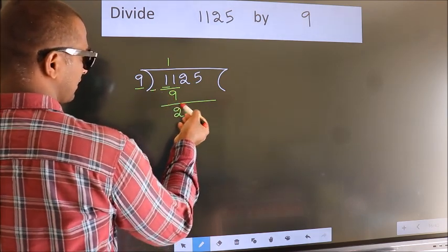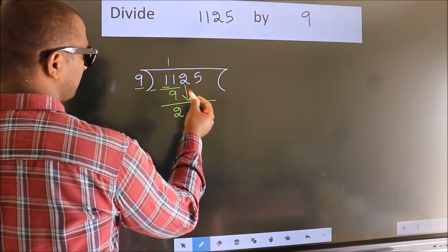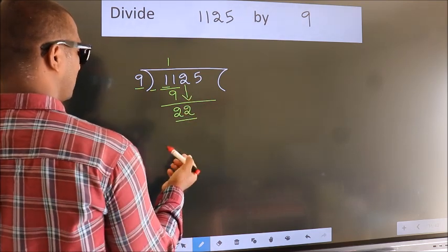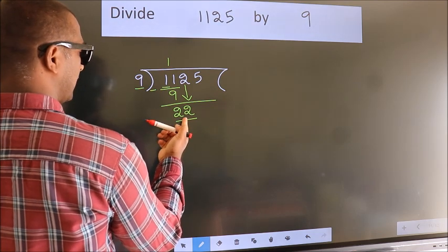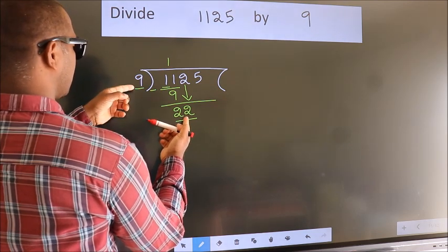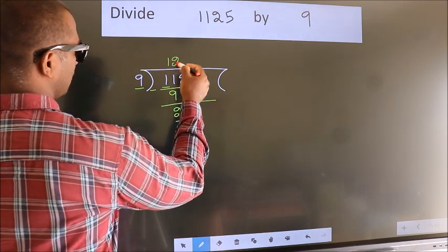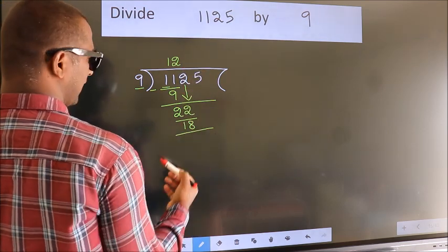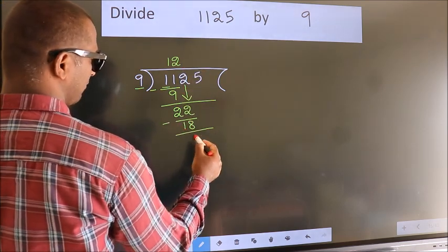After this, bring down the beside number. So, 2 down. So, 22. A number close to 22 in 9 table is 9 twos 18. Now, we subtract. We get 4.